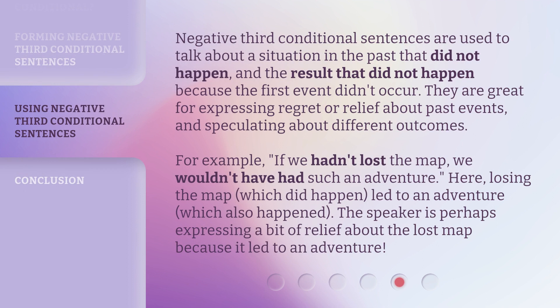Negative third conditional sentences are used to talk about a situation in the past that did not happen, and the result that did not happen because the first event didn't occur. They are great for expressing regret or relief about past events, and speculating about different outcomes. For example: if we hadn't lost the map, we wouldn't have had such an adventure. Here, losing the map — which did happen — led to an adventure, which also happened. The speaker is perhaps expressing a bit of relief about the lost map because it led to an adventure.